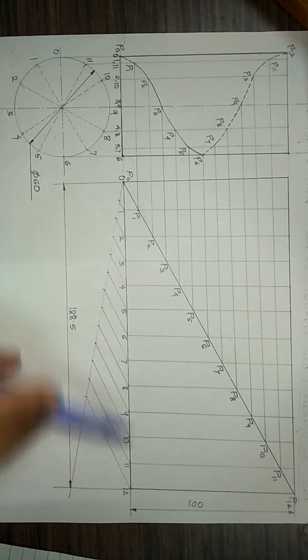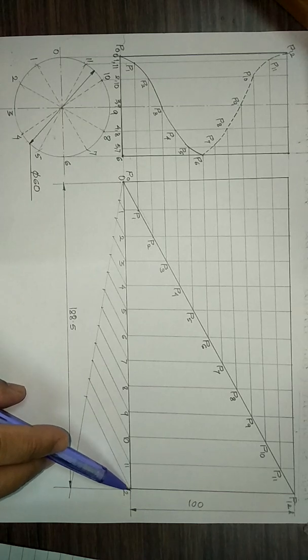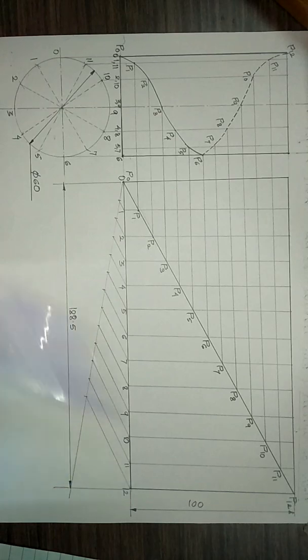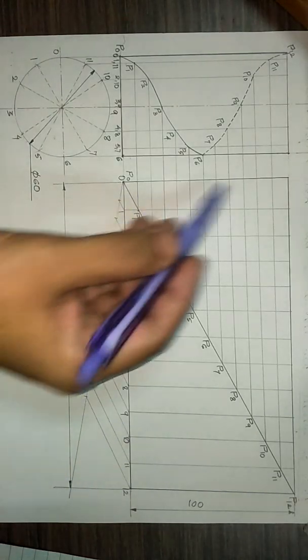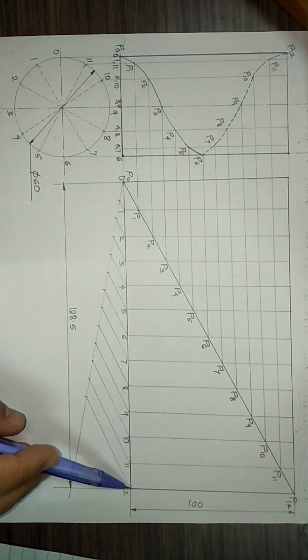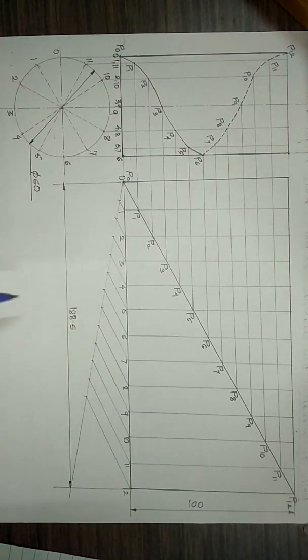Then we have drawn this rectangle which is the development of the cylinder. The height of this rectangle will be 100 mm and this length will be equal to the circumference of the circle, that is pi into d. In this case, it is 188.5 mm.